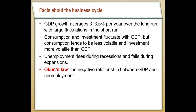These fluctuations tend to come from changes in consumption and investment. Consumption and investment tend to be the less stable portions of GDP. If you remember from chapter three, GDP Y is equal to C plus I plus G plus NX. Primarily those fluctuations tend to come from investment, and a little bit from consumption.